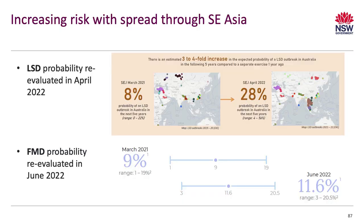Highly pathogenic avian influenza was not on that original list because the year before, Victoria had actually had an HPAI outbreak, which is now resolved. Going back to just over 12 months ago, when foot and mouth disease and lumpy skin disease were both diagnosed in Indonesia, those risk analyses were conducted again — and being geographically closer to Australia, the risk of those diseases entering the country did increase.